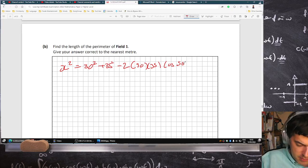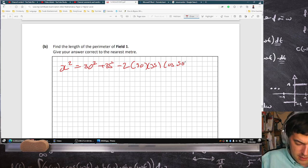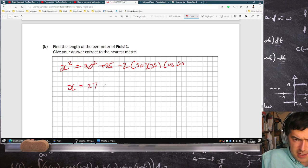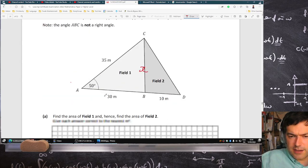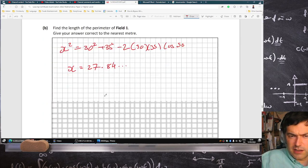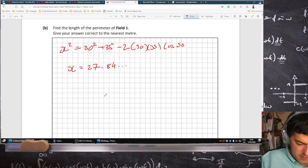30 squared plus 35 squared minus twice 30 times 35 times cos 50. So x is 27.84, but it's the perimeter, so I'd have to add it to 35 and 30. To the nearest meter, the perimeter equals 93 meters.